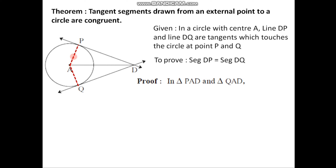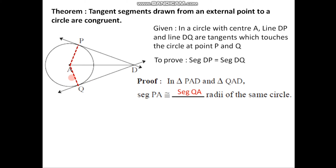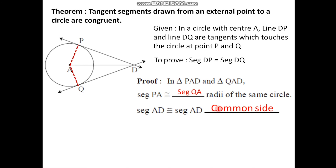We are trying to show that these two triangles are congruent. The first element is segment PA is congruent to segment QA, as these are the radii of the same circle — they must be congruent. The second element is segment AD is congruent to segment AD, as segment AD is the common side for both triangles. The reason is common side.